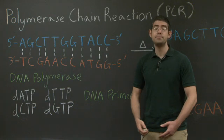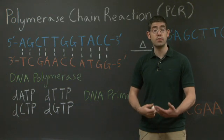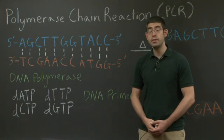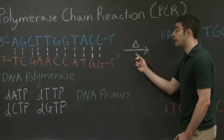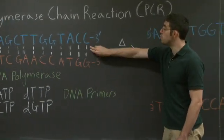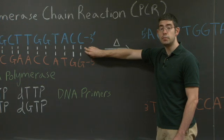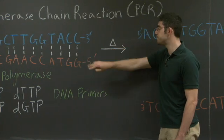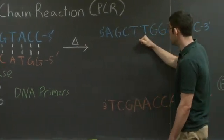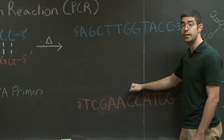You combine all these together, and the first thing that you do is you heat the reaction up. What this does is that, by adding heat to the system, you break the hydrogen bonds between the two different DNA strands. This results in two separate DNA sequences.